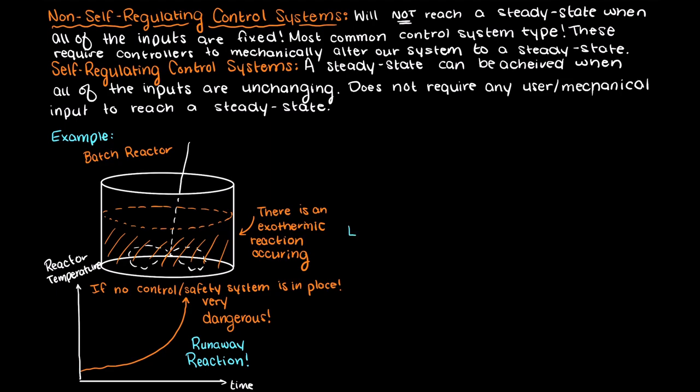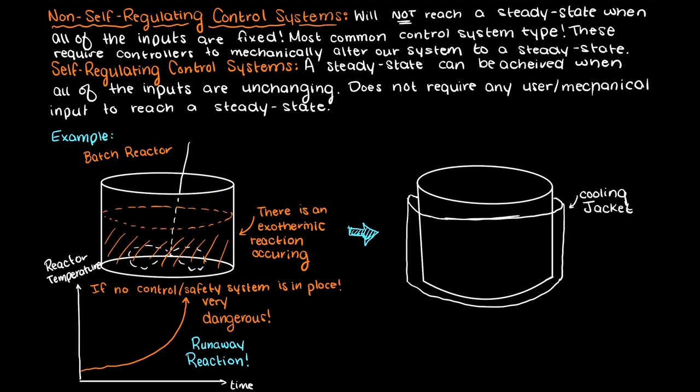To prevent this and force our system to a steady state, we can add a cooling jacket to our tank to take some energy out of the system. Well, this makes our system non-self-regulating.